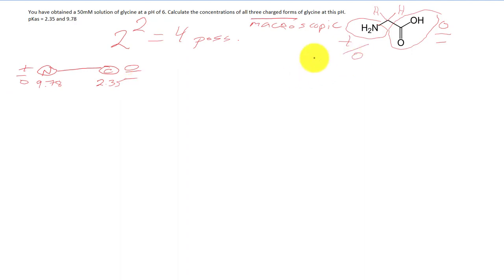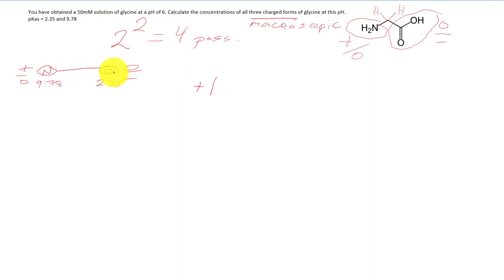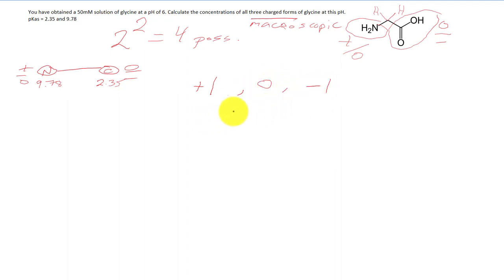We can figure out which charge forms exist by looking at protonation states. The most protonated state for the N is positive, and for the C is neutral, giving an overall +1 charge form. The least protonated state is neutral at N and negative at C, giving −1. These charge forms can only change by single integer intervals and must connect +1 to −1 through 0, giving us three charge forms: +1, 0, and −1.